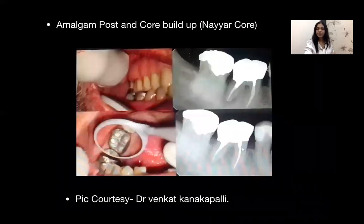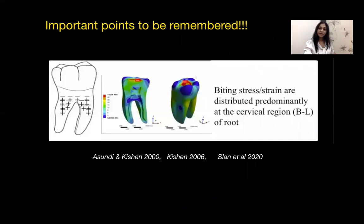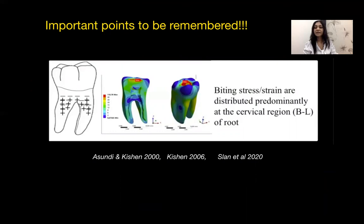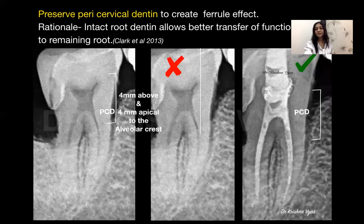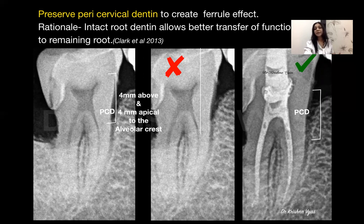Niacore is also useful whenever there is excessive damage or damage going subgingival. An important point regarding diameter: the maximum stresses are in the cervical area of any tooth, so pericervical dentin must be preserved. Pericervical dentin is the area 4 millimeters above and 4 millimeters below the alveolar crest. When we preserve this, it acts as a natural ferrule, allowing better transfer of functional loads to the remaining root and providing better fracture resistance.